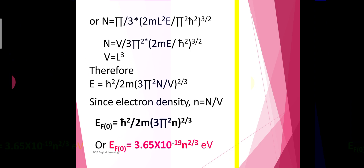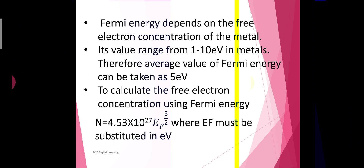Since the density of electrons n (small n) equals the number of electrons N divided by the volume of the metal, Ef(0) = (ħ²/2m)(3π²n)^(2/3), or equivalently Ef(0) = 3.65 × 10⁻¹⁹ × n^(2/3) eV. This value is obtained by substituting the values of ħ, m, and π. Fermi energy depends on the free electron concentration only, and its value generally ranges between 1 eV and 10 eV in metals, so the average value can be taken as 5 eV.